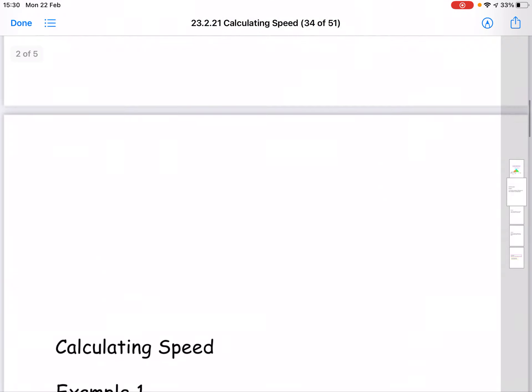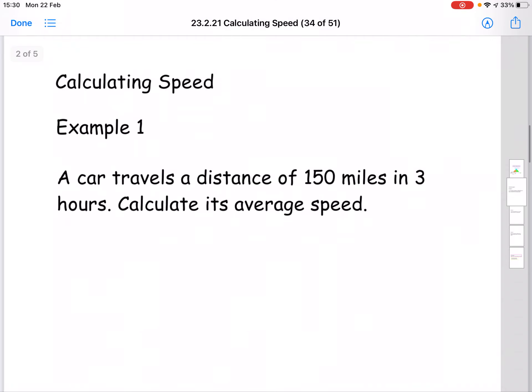So let's do a couple of examples. The first one would be a pink level example. Here we have a car travels a distance of 150 miles in three hours. Calculate the average speed of the car. So the first thing you would do is you would make a note of your distance, speed, time triangle.